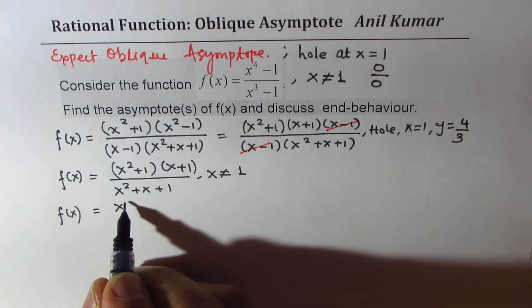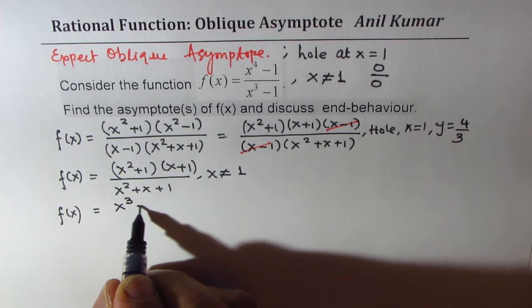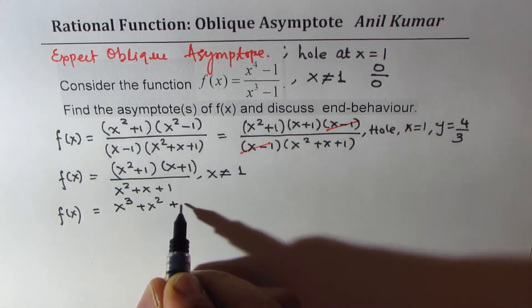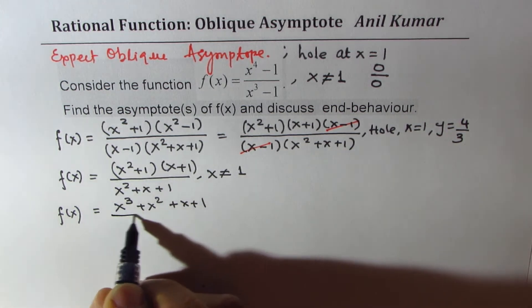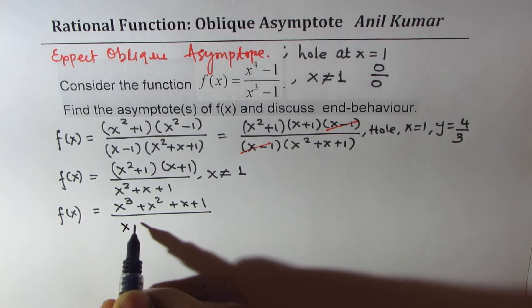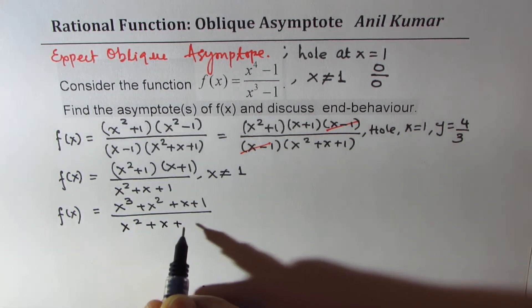So x squared times x is x cubed. Then with 1, we get x squared. And then you multiply, you get x plus 1. That becomes the numerator. The denominator is x squared plus x plus 1.